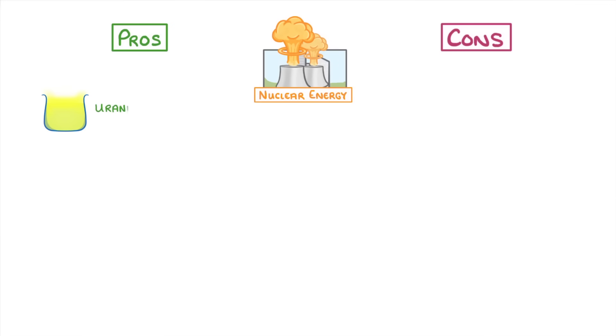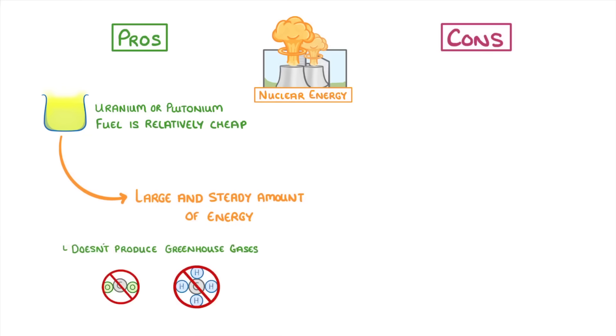The last thing we need to cover are the pros and cons of nuclear energy. The pros are that the uranium or plutonium fuel is relatively cheap, and it produces a large and steady amount of energy. And although it's not classed as a renewable energy, it is clean, as it doesn't produce greenhouse gases like fossil fuels do.